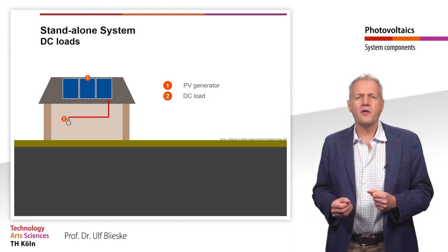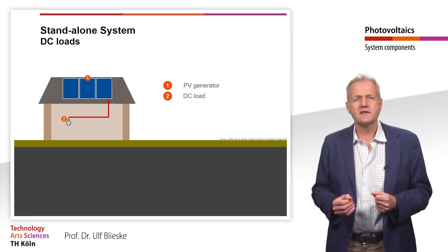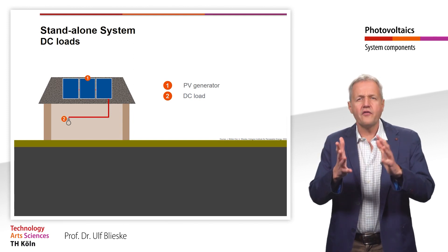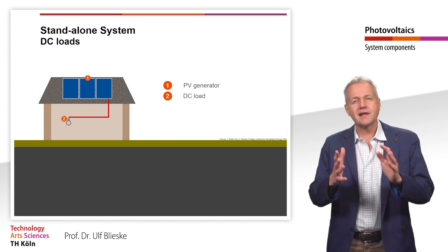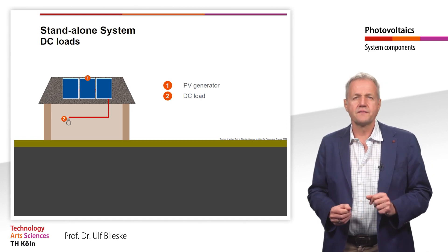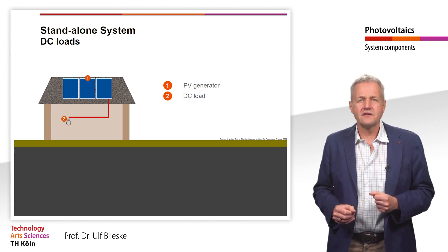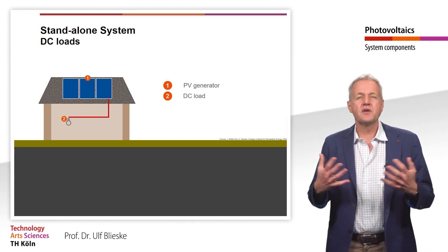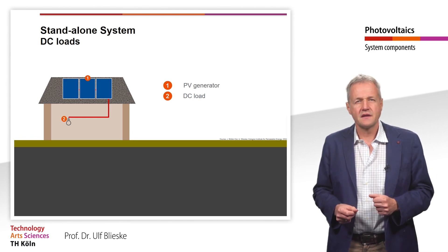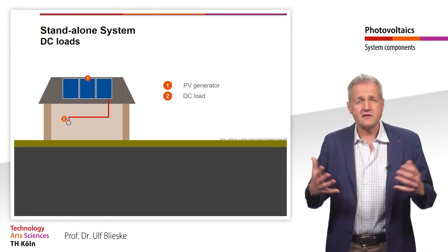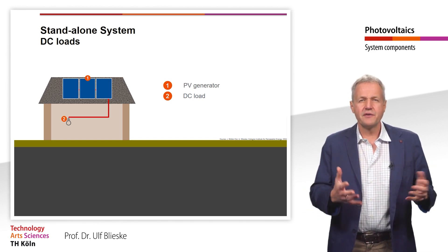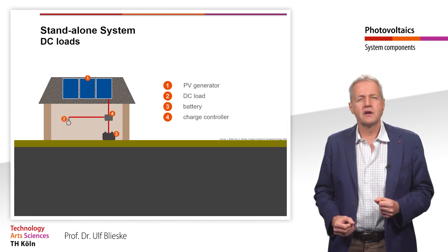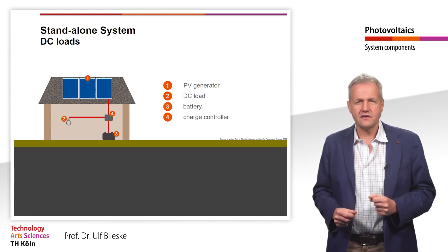The simplest form of such a standalone PV system is a directly coupled system, where the DC output of a PV module or array is directly connected to a DC load. However, the load in this system can only operate when the sun is shining and the PV modules are generating power. If it is also to be operated at night or during periods of low irradiation, a battery storage must also be integrated into the system.